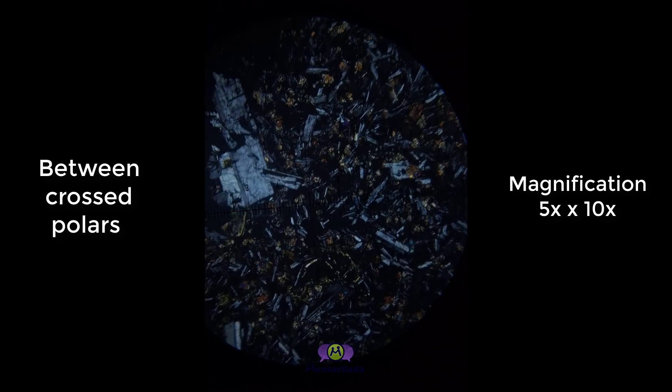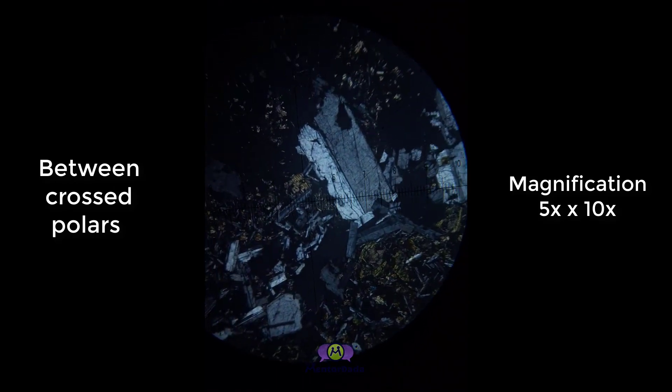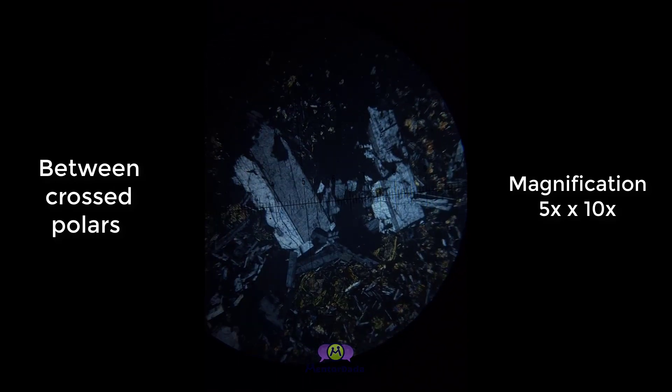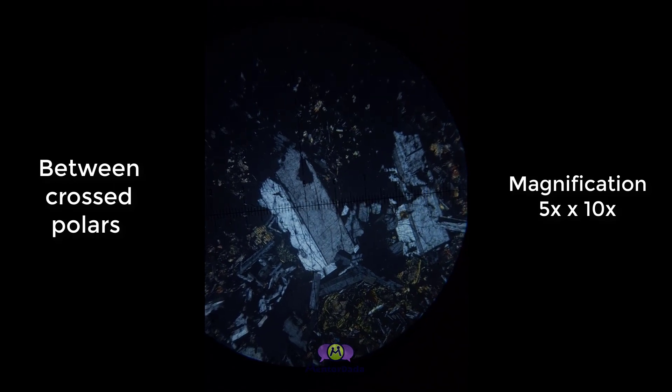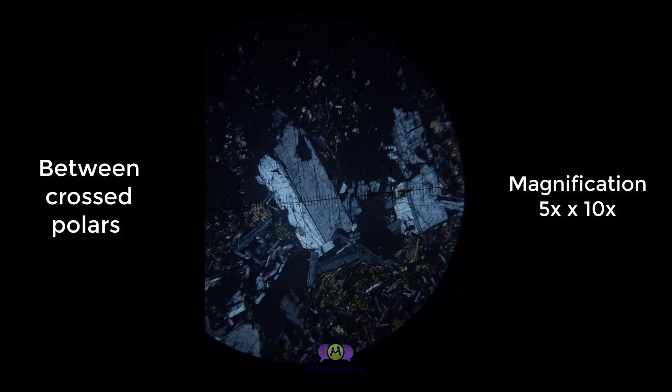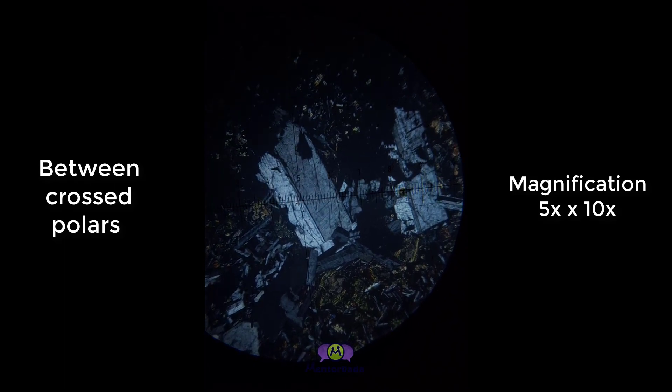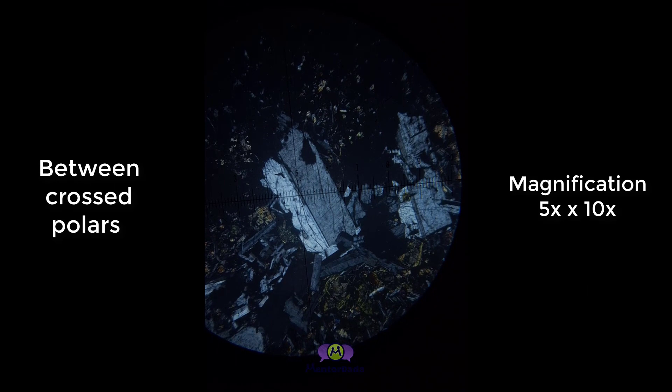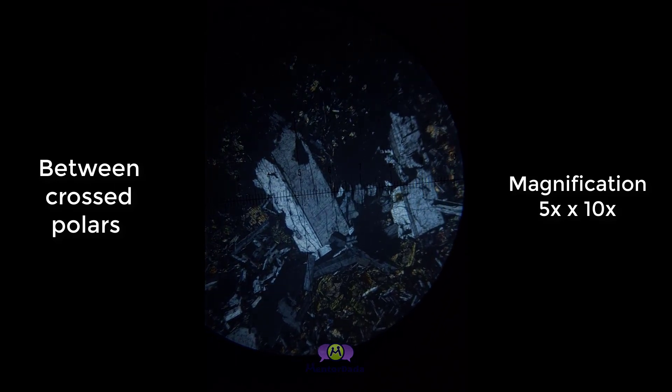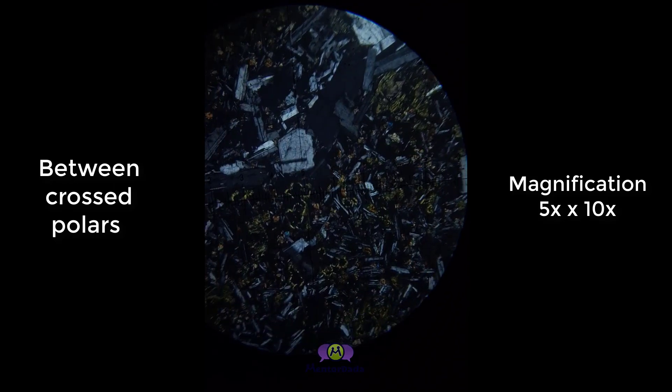Here you are observing a large plagioclase feldspar, and you can term this texture as porphyritic texture because the large grain of plagioclase feldspar is embedded in a fine-grained groundmass.